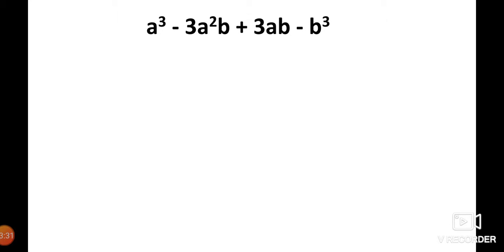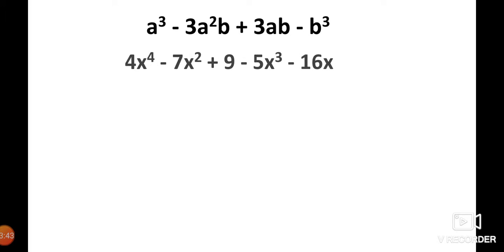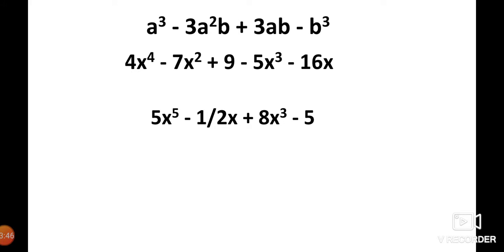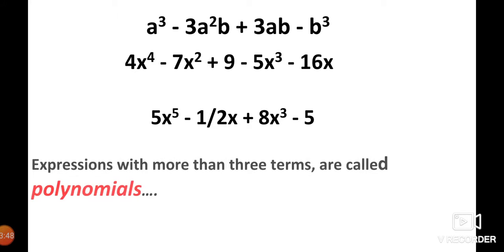See another example: a³ − 3a²b + 3ab − b³. In this algebraic expression, more than three terms are present. So algebraic expressions with more than three terms are called polynomials.